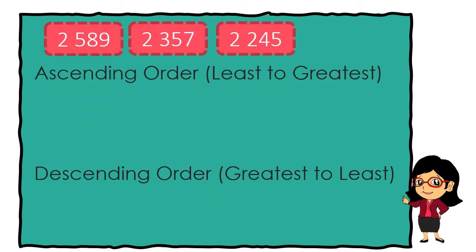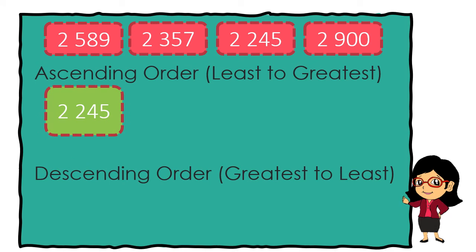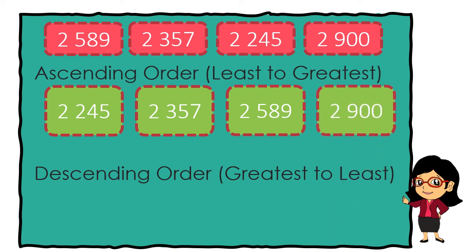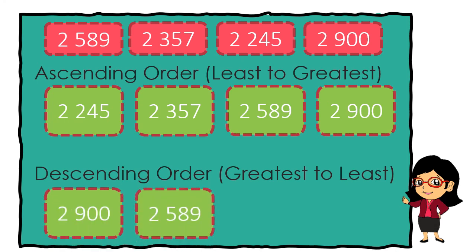Going back to our examples, let's arrange them first in ascending order, meaning we start from the least to the greatest number. So we will have: 2,245 — 2,357 — 2,589 — and 2,900. On the other hand, if we arrange them in descending order, we start from the greatest number to the least. So we will have: 2,900 — 2,589 — 2,357.